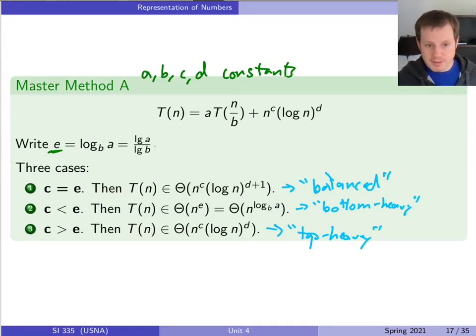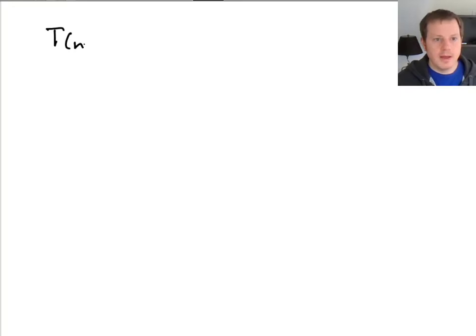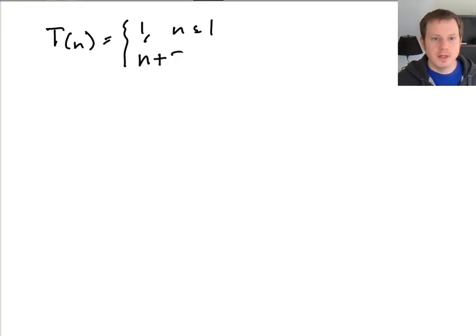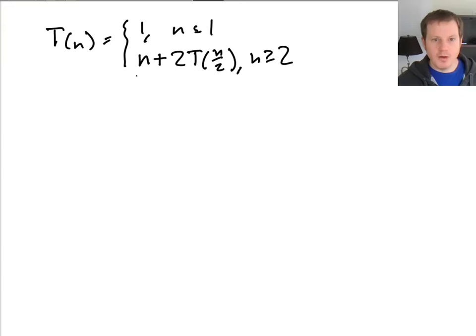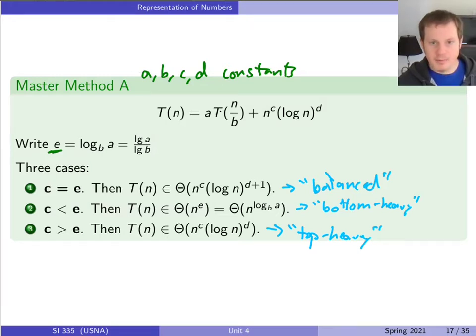We've seen all three of these instances so far. Let's look at examples of how we'd actually apply this master method in practice. Here's the merge sort recurrence: T of N is one if N is less than or equal to one, and otherwise it's N plus two T of N over two. We know the answer is big theta of N log N, but let's see how we actually use the master method. The first thing is to recognize the values of the constants A, B, C, and D.